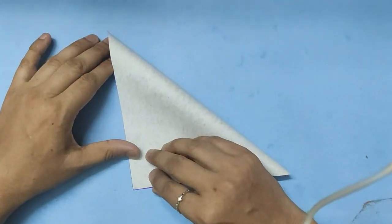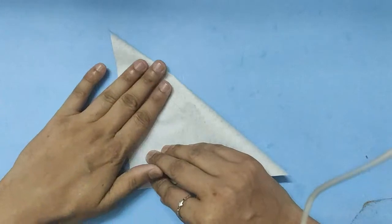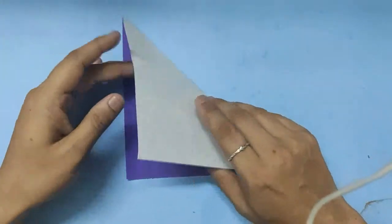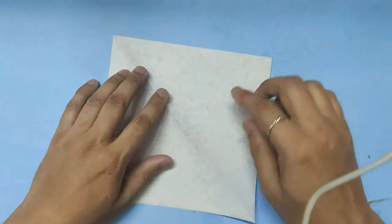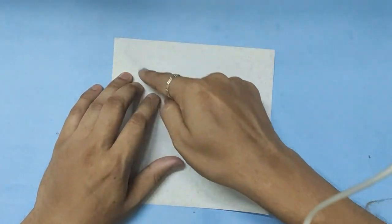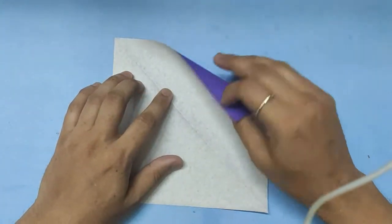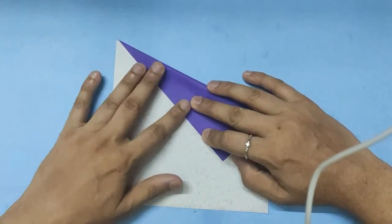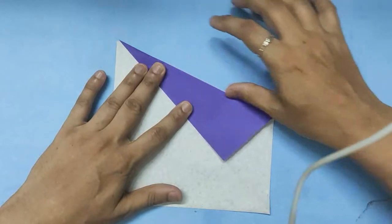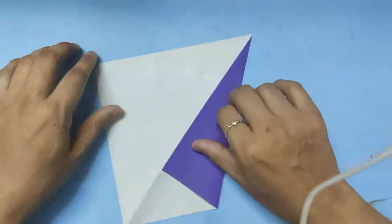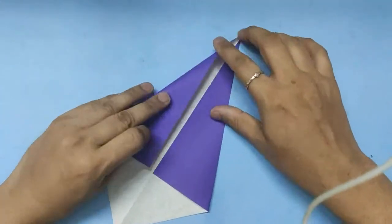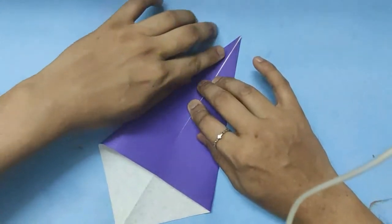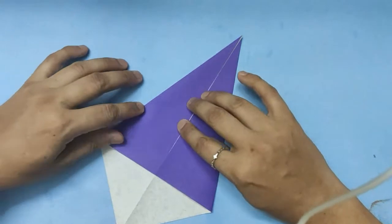We will give a triangular fold with color inside. We will open it, bring the edge to the diagonal line. So we make a kite fold, bringing both sides to the central line. We have now made the kite fold.